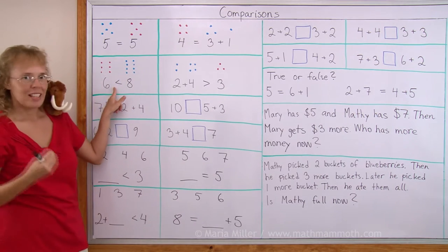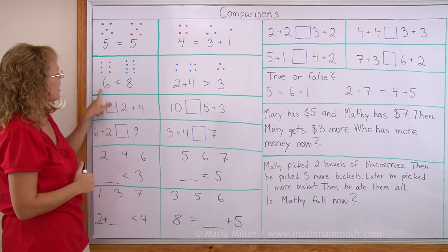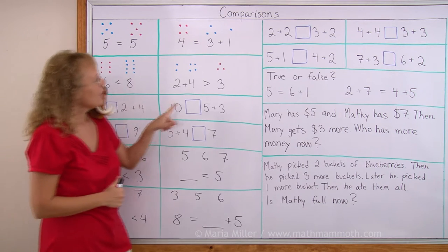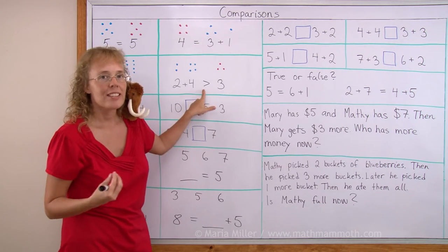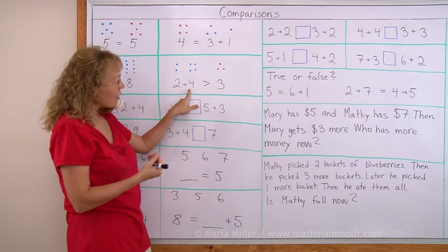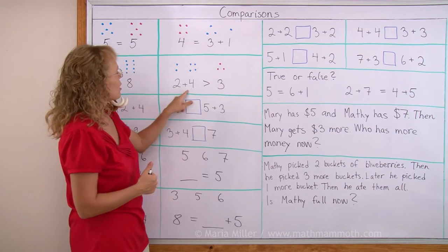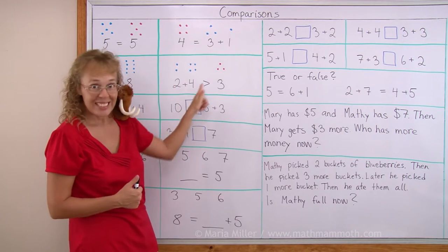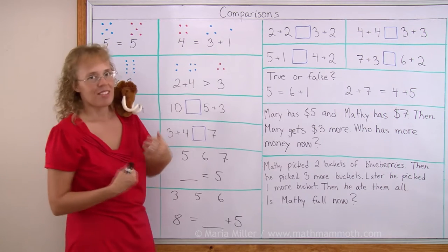And then here we have less than sign, 6 is less than 8. And then here we have greater than sign, 2 plus 4 is greater than 3. 2 plus 4 makes a total of 6. And 6 is greater than 3.